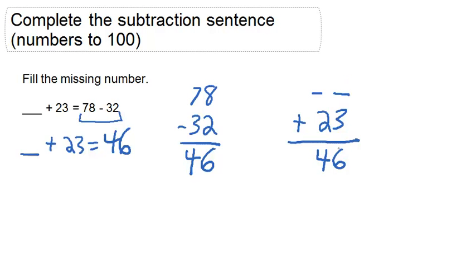What plus 3 gets us to 6? It has to be 3 plus 3 to get to 6. Then, what plus 2 gets us to 4? It has to be a 2. So we know that our missing number is 23.